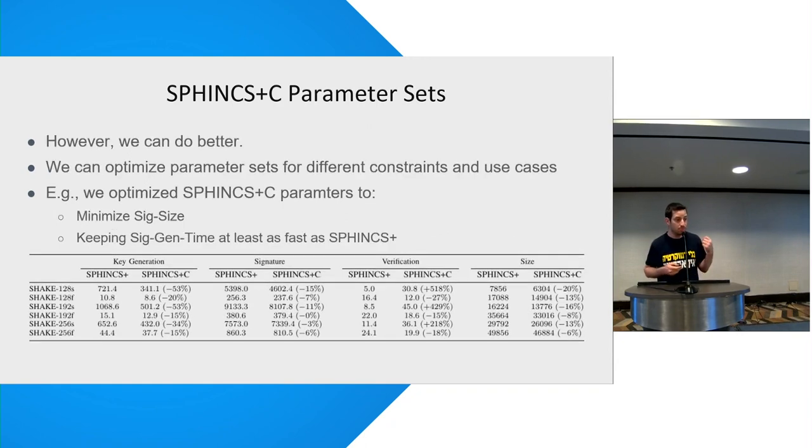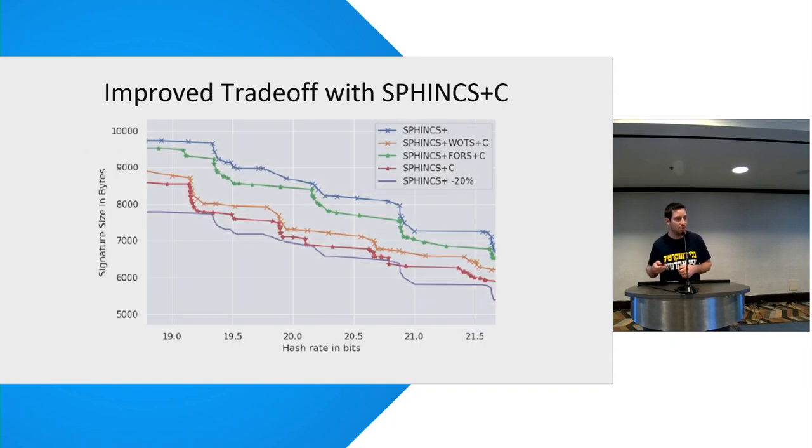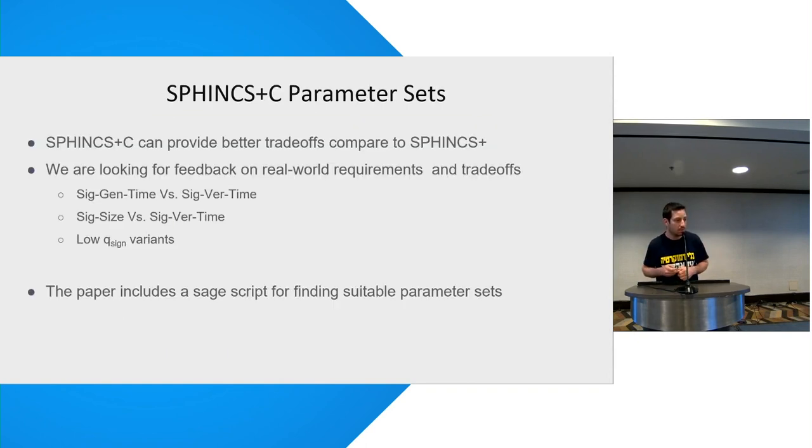But we can actually do better than that. We can use those better trade-offs in order to get much better results. And this is what we did. And actually we can look in all around various trade-offs. We can get better trade-off curves than what we could have done before, which is nice. And we're actually looking for real-world requirements for what is the best use case and what the people really want to optimize on. Is it size? Is it speed?